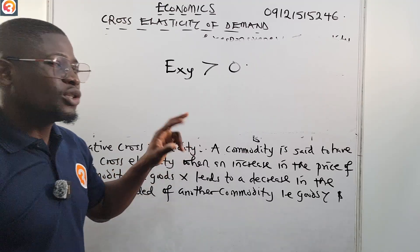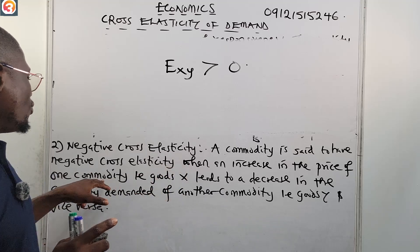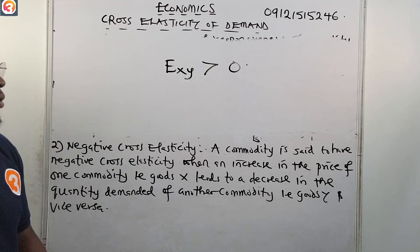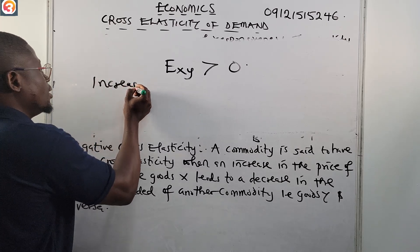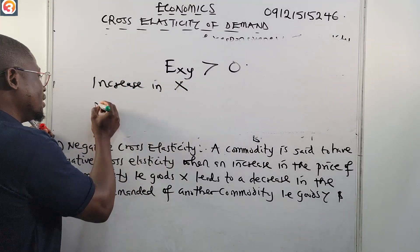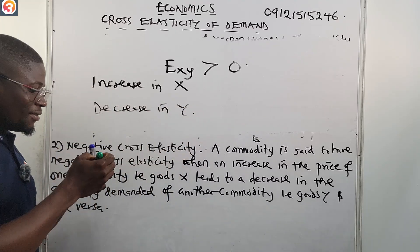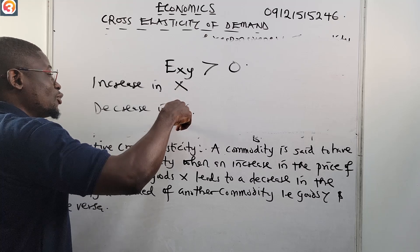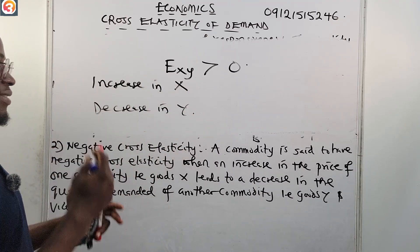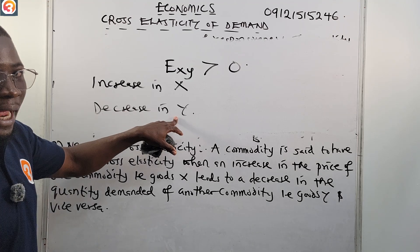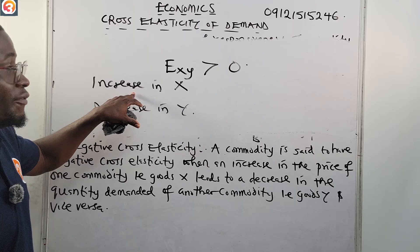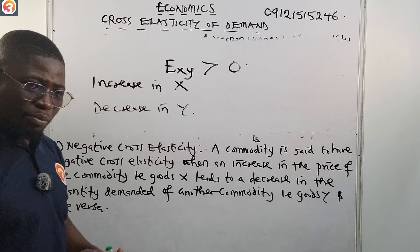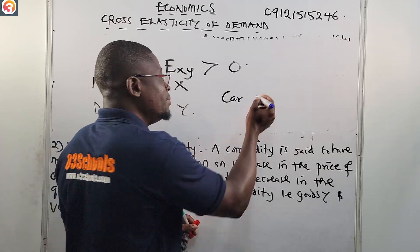For negative cross elasticity, a commodity is said to have negative cross elasticity when an increase in the price of one commodity X leads to a decrease in the quantity demanded of another commodity Y, and vice versa. So an increase in X leads to a decrease in Y, and an increase in Y leads to a decrease in X — they move in opposite directions.